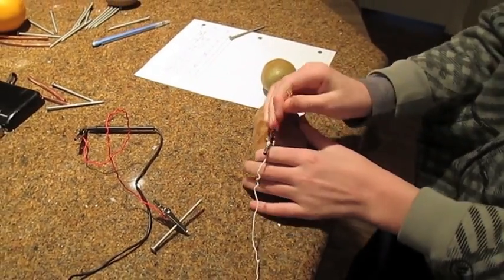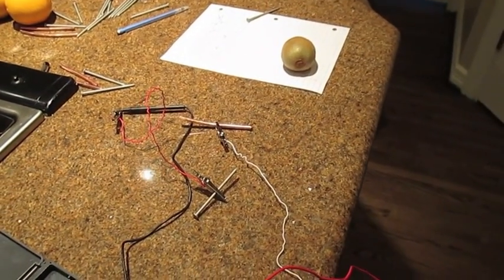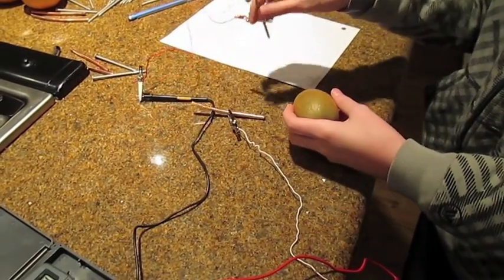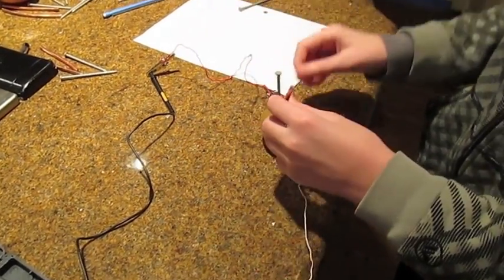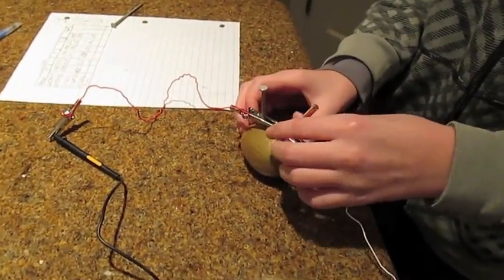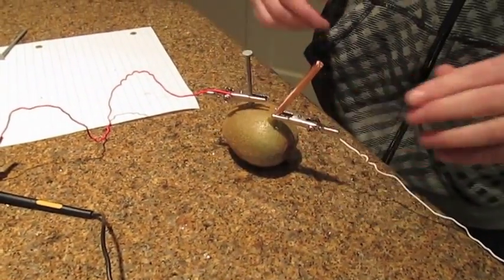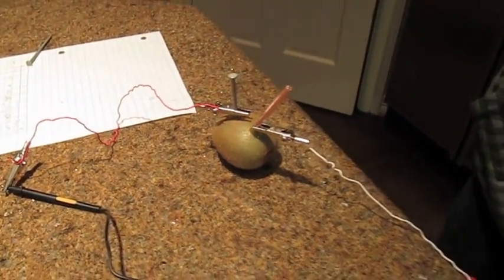And this is how you make a kiwi battery. Goodbye potato. Hello kiwi. One thing you've got to make sure is that the nail and the copper piece of metal don't touch inside the fruit. And as well the wires can't touch. Like if those 2 alligator clips were touching then it wouldn't work.